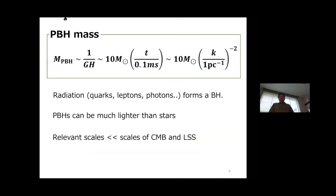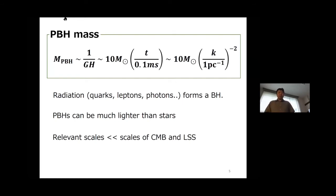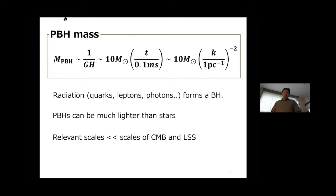We can estimate the mass of the resultant black hole by equating it to the horizon mass at the time of formation. For a 10 solar mass primordial black hole, such black holes are formed when the age of the universe is around 0.1 milliseconds. We can also relate the PBH mass to the comoving wave number of the corresponding perturbation — for a 10 solar mass PBH, the comoving wave number is about 1 Mpc inverse.